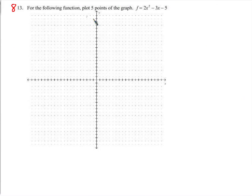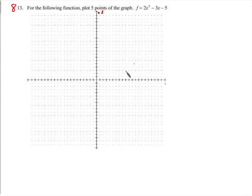For the following function, plot 5 points of the graph of f — you pick the 5 points. How do we find a point? We plug in any x we want and we get out the f value. We plot that point, and that's exactly what I was looking for — do that 5 times.